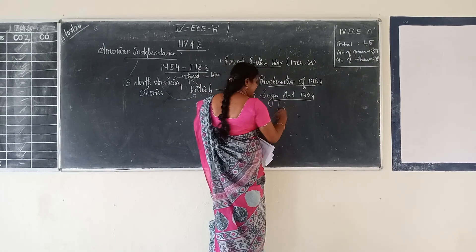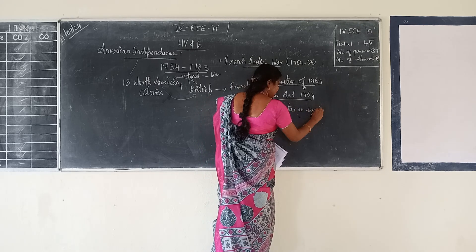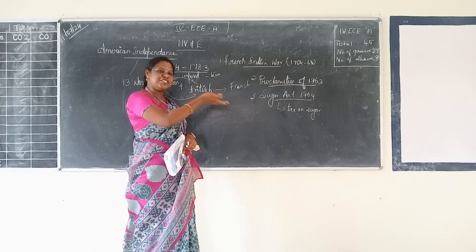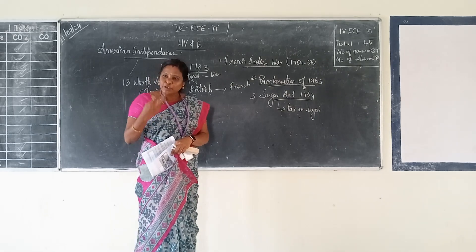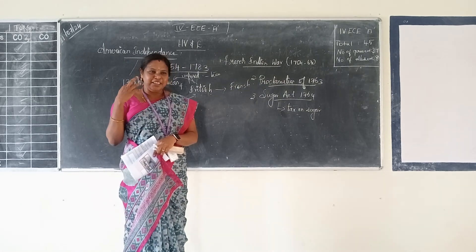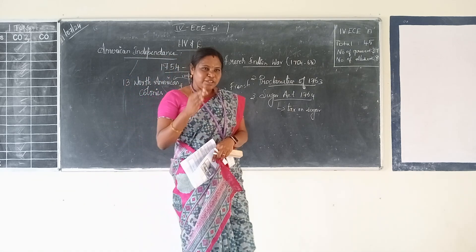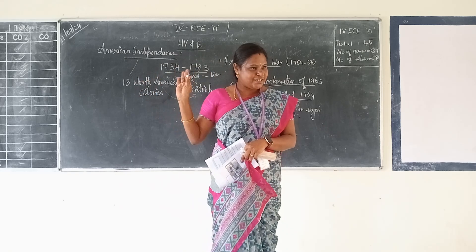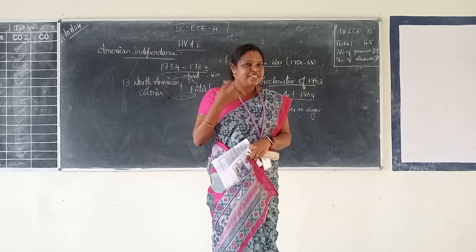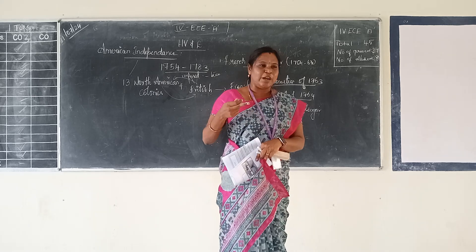The Sugar Act was a tax on sugar. Similar to the salt march in India, the British mostly taxed sugar products. They put a tax on sugar products for the colony people. The colony people didn't want to pay tax for sugar. That place belongs to the 13 colonies, where the British were ruling them — it was their own land, and they didn't want these taxes.